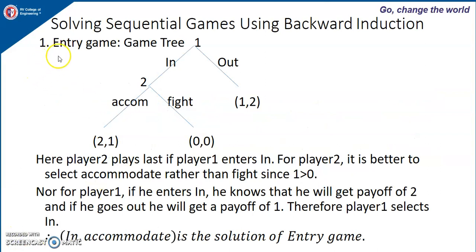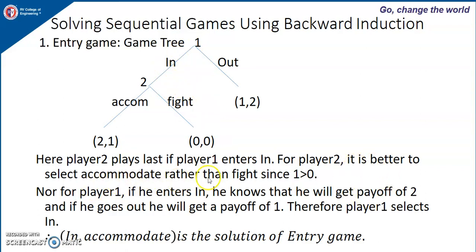Let us see the entry game example. Here player 2 is the last player and he plays after the history 'in'. Player 2 is better off selecting accommodate rather than fight: if he selects accommodate he gets a payoff of 1, if he selects fight he gets a payoff of 0. Since 1 is greater than 0, for player 2 it is better to select accommodate.